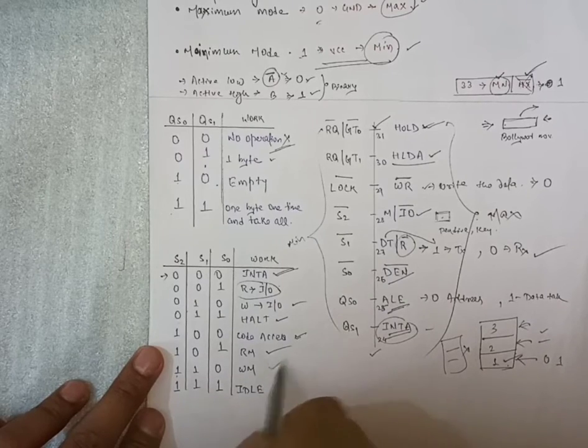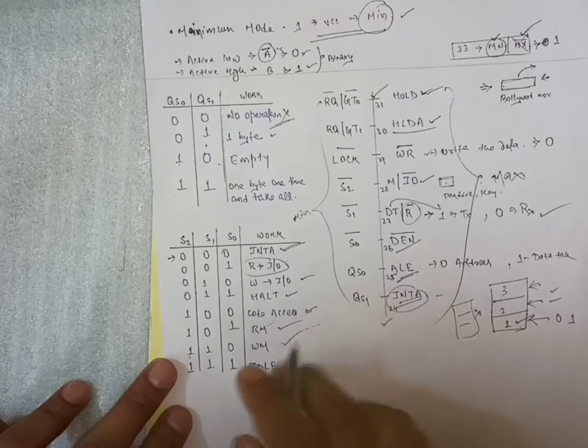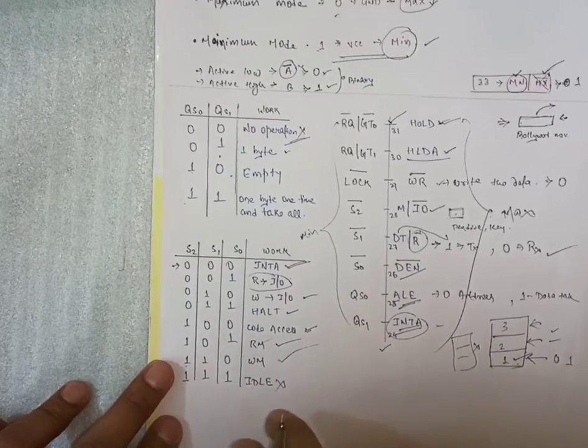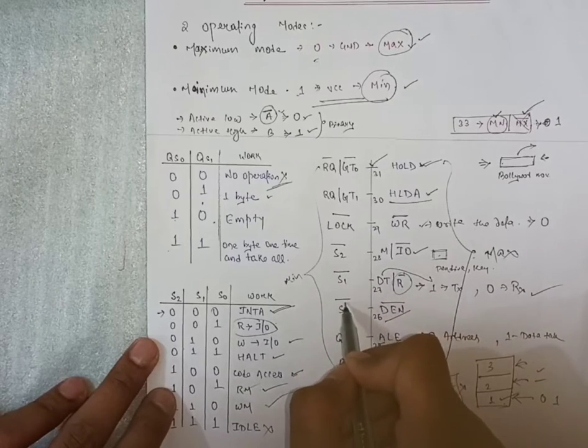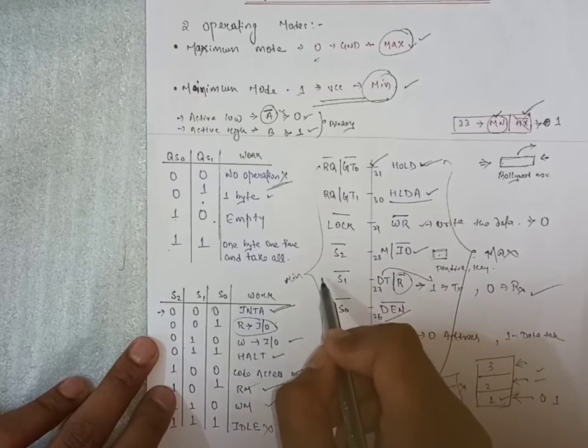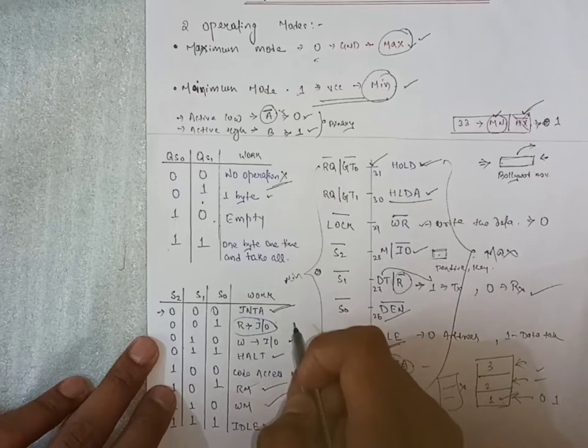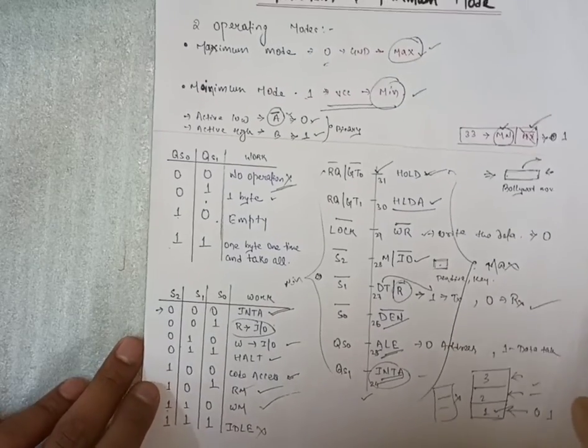One one zero, that is writing from the memory. Reading from memory, writing from memory. Triple one, in ideal condition, it is not going to work. Why it is not going to work? Because S2, S1, S0, all are actively low pins. So only work this on zero. When value will be zero, then it is going to work. If value will be one, then it will not going to perform any action.